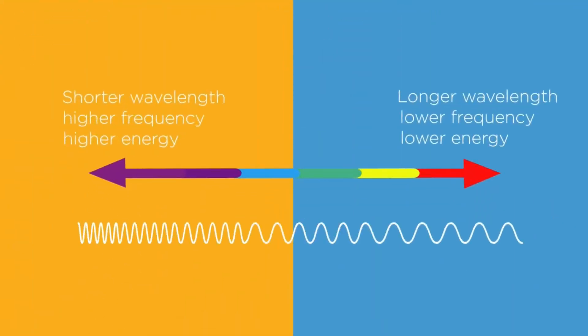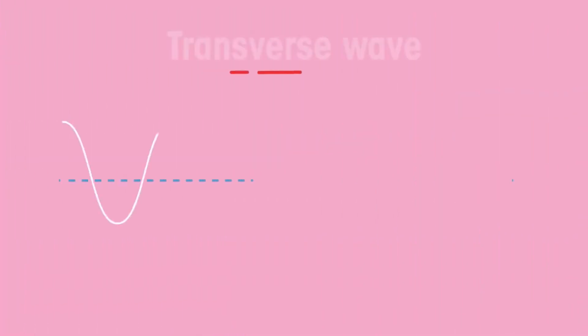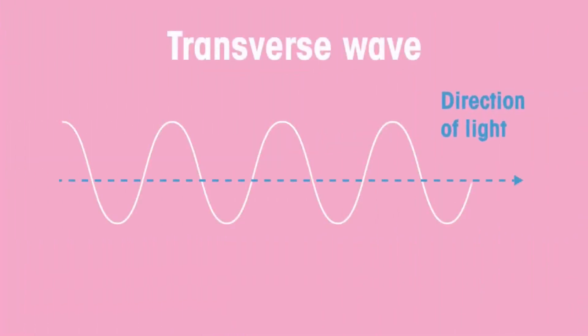Visible light is part of the electromagnetic spectrum. Light is a transverse wave and travels in straight lines.